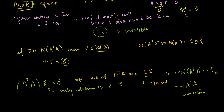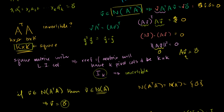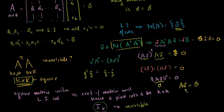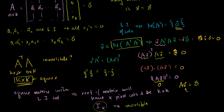This is a pretty neat result. Starting with a matrix A that has linearly independent columns — it wasn't just any matrix, and it's not necessarily square — we can construct A transpose A, a square matrix, and we now know that it also has linearly independent columns. It's square, and therefore it is invertible.